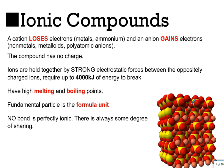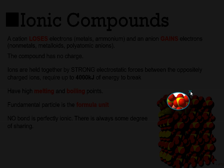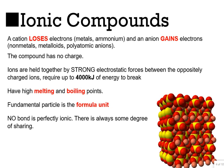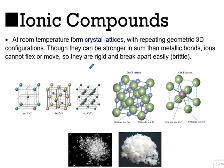The fundamental unit of the ionic compound — the formula unit — is the lowest whole number ratio, such as Na₂SO₄. No bond is perfectly ionic; there's always some degree of sharing in any bond. At room temperature, all ionic compounds form a crystal lattice with repeating geometric 3D configurations. Though ionic bonds can be stronger than metallic or even covalent bonds, they can't move, so they're rigid and break apart easily — strong bonds, but since they are rigid, they snap and are brittle.